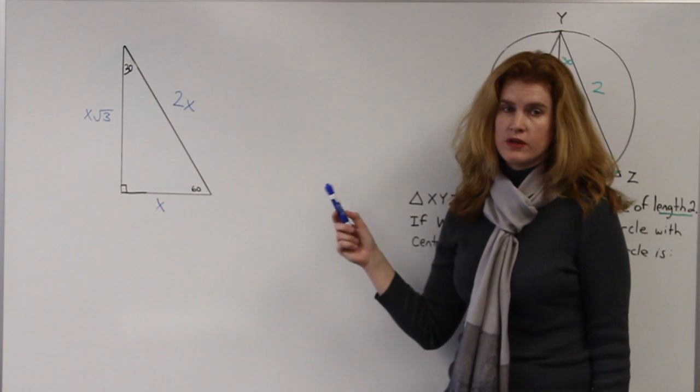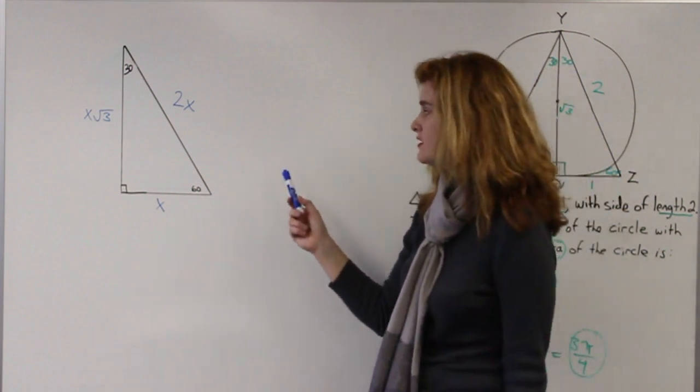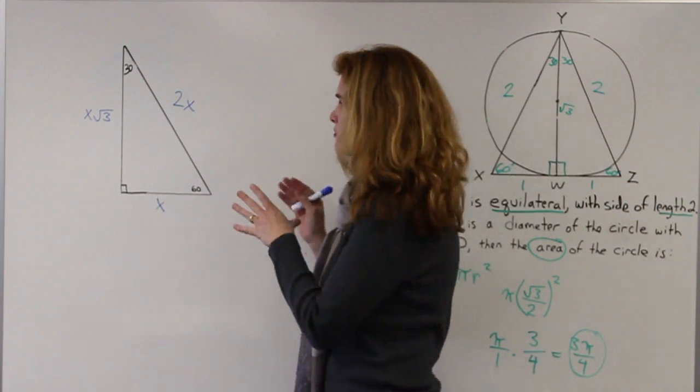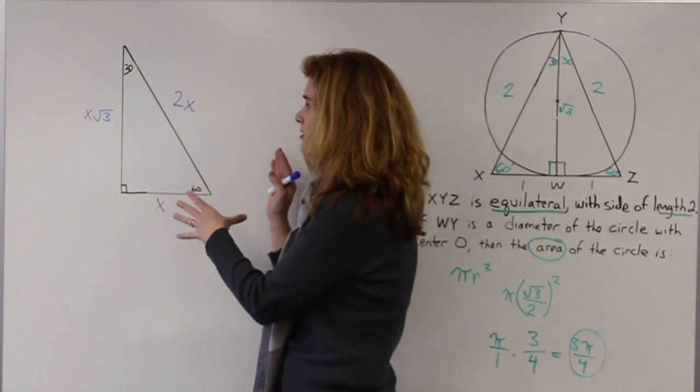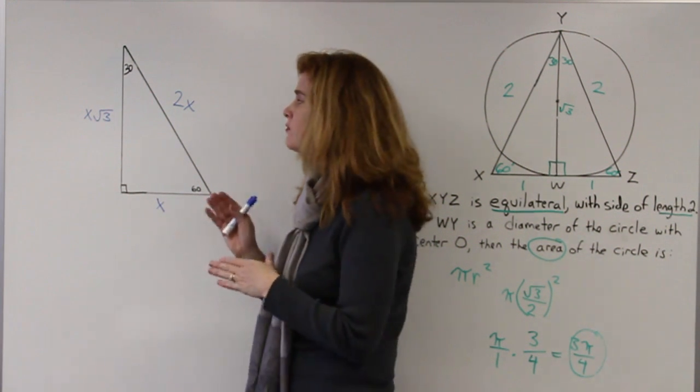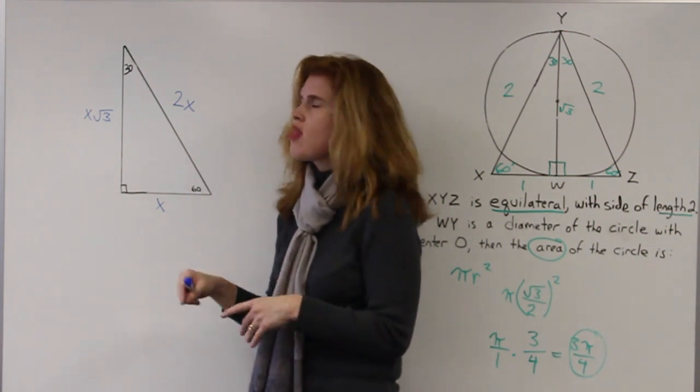So we've just seen a problem where it was really important to remember your 30-60-90 ratio. I want to just reinforce this really important geometry concept. The SAT loves the 30-60-90 triangle, so it's really important that you get this down.